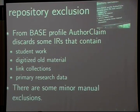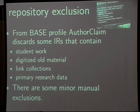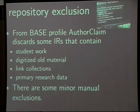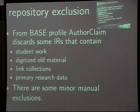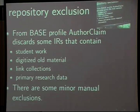I also use the repository profile to exclude certain repositories whose material I don't need in author claim with priority: works for students, theses and dissertations, digitized old material (no pharaoh is going to come and claim his writings), link collections where authorship is problematic, and primary research data. There are also some minor manual exclusions — for example, I exclude UK PubMed Central because it's already in PubMed.